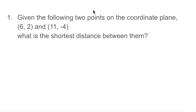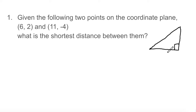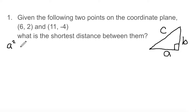In problem number one, we're given two points on the coordinate plane, (6,2) and (11,-4), and we need to find the shortest distance between them. We're going to solve this using the Pythagorean Theorem. Given a right triangle with sides A, B, and C — where C is the hypotenuse, the longest side — the Pythagorean Theorem states that A squared plus B squared equals C squared.